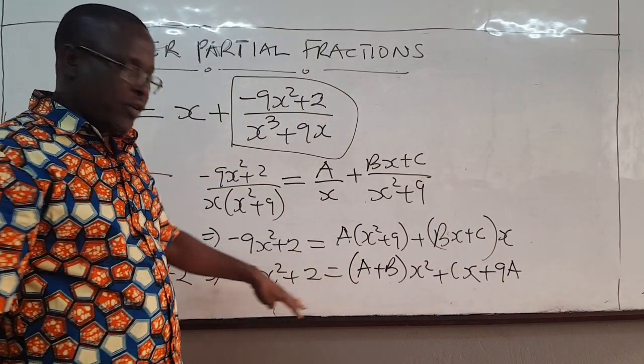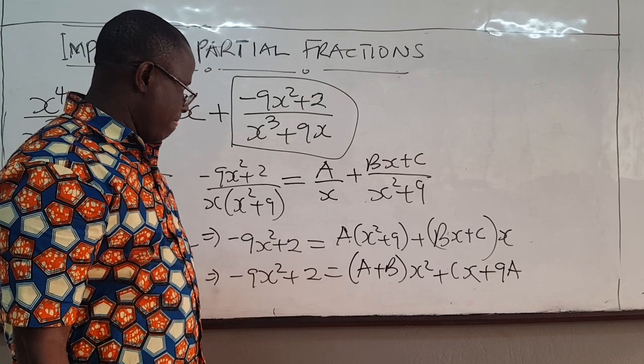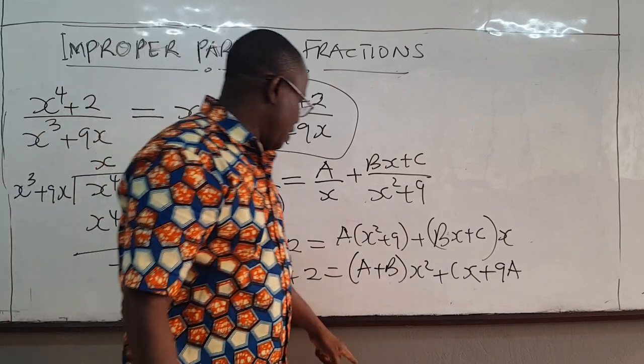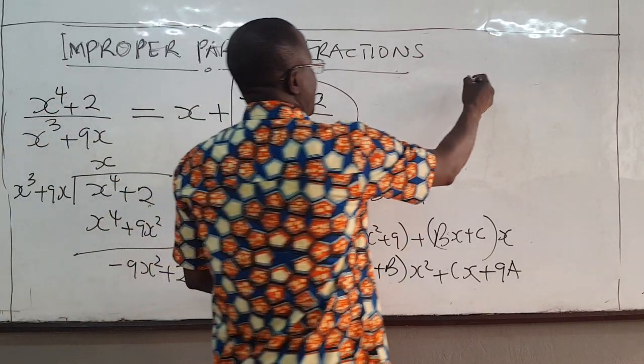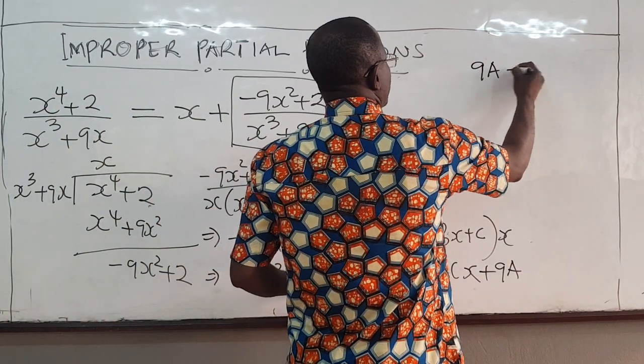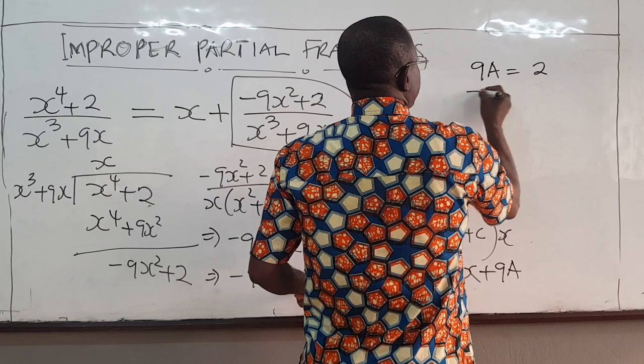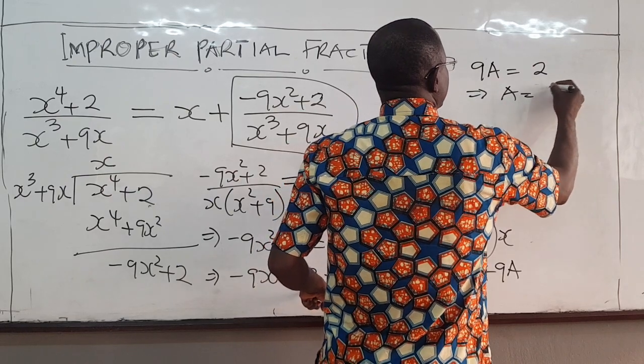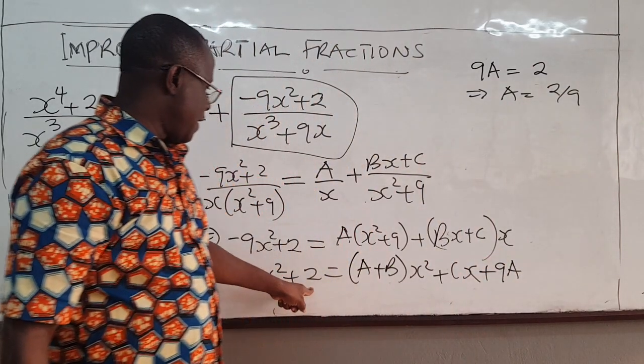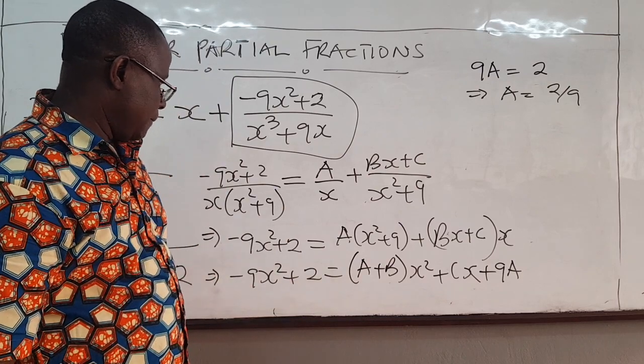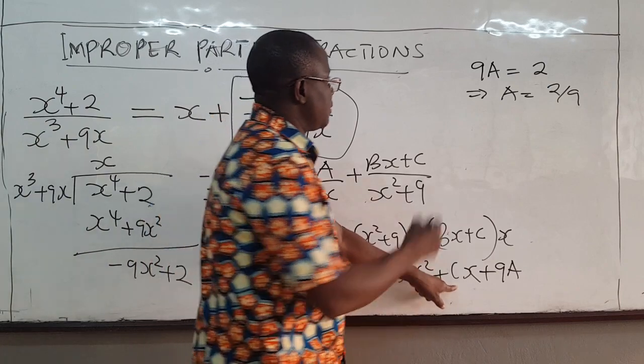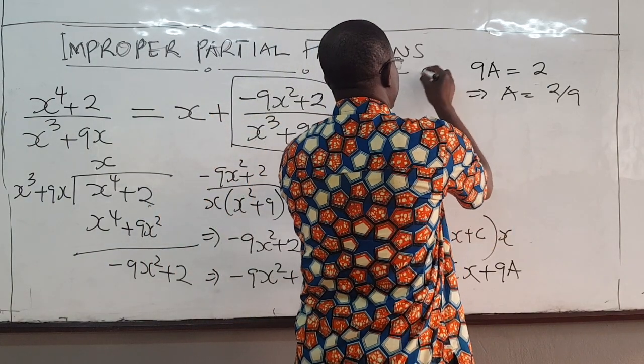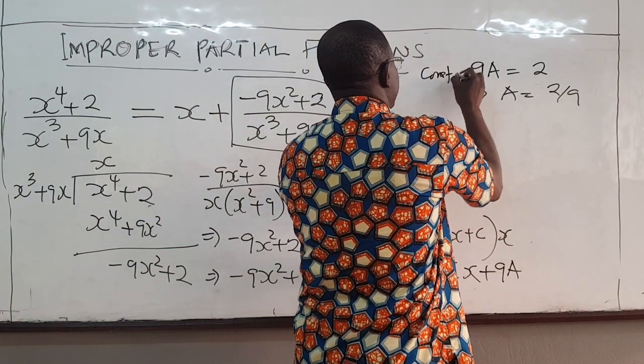So just compare the coefficients as we've done before. It's easy to start with a constant term. 9a should be equal to 2. 9a would be equal to 2, which implies that a is equal to 2 over 9. C would be 0. There is no x term here. So c equals to 0. So here we are comparing the constant terms.